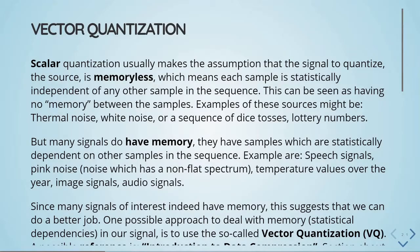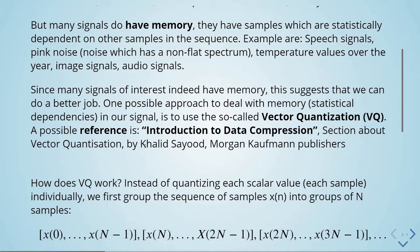This can be generalized to a multi-dimensional case called vector quantization. Scalar quantization assumes the signal is memoryless — each sample is statistically independent of any other sample. Examples include thermal noise, white noise, dice tosses, and lottery numbers. But many signals do have memory, meaning samples are statistically dependent on other samples. Examples include speech signals, pink noise, temperature values over a year, image signals, and audio signals. Since many signals have this memory, we can take advantage of it.